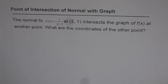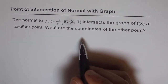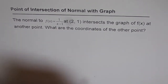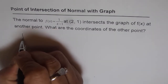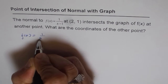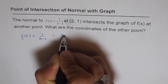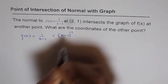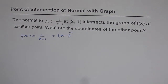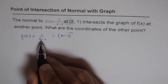So we will first find the equation of the normal as we did earlier. And then with that equation we will find the point of intersection of the normal with the function. The function given to us is f(x) equals 1 over x minus 1, which I can write as (x minus 1) to the power of minus 1. We can use the power rule to find the derivative, but in this particular video we will use the quotient rule instead.